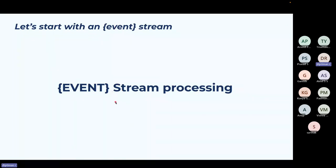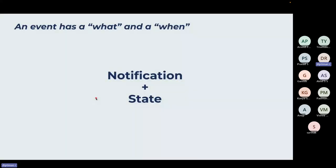I want to rename stream processing as event stream processing. The necessary question is: what is an event? In simple terms, an event is something which has a notification and a state. That's more of a design decision, but a notification and a state along with the timestamp of when the event occurred - if possible to capture - is what constitutes an event.